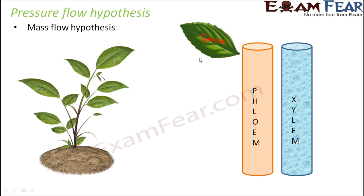The first step is to transport food from the source into the phloem. This happens by active transport. Once sugar is actively transported into the phloem, the sugar concentration increases, meaning the solute concentration increases and the water potential decreases. In the xylem there is plenty of water, so the water potential is high there. Water will therefore start diffusing from xylem into the phloem.